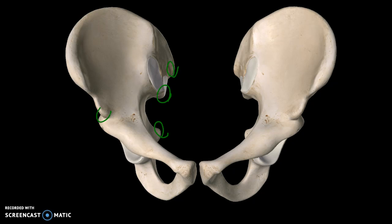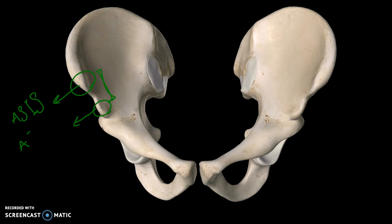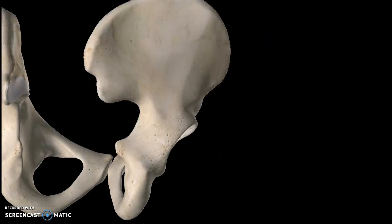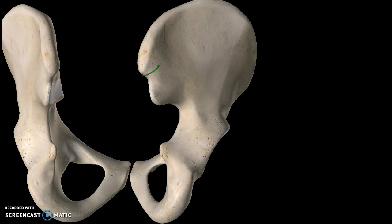These pointy structures are known as spines. Since we are looking at the anterior view of the pelvis, this top spine is the anterior superior iliac spine, and the one below it is the anterior inferior iliac spine. On the posterior view, this top spine is the posterior superior iliac spine, and the one below it is the posterior inferior iliac spine.